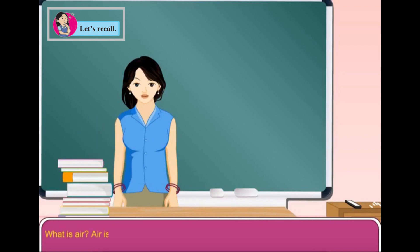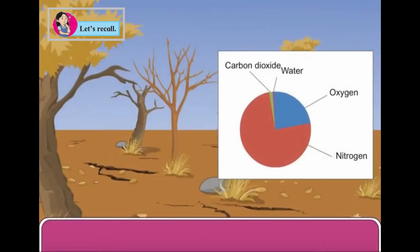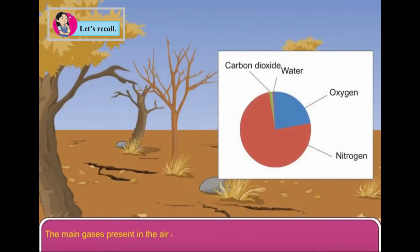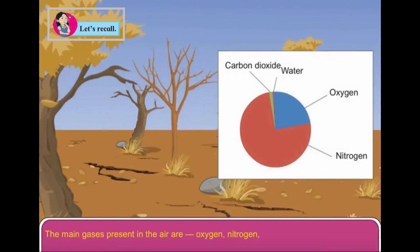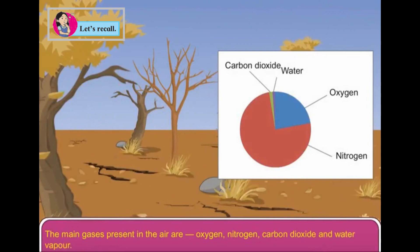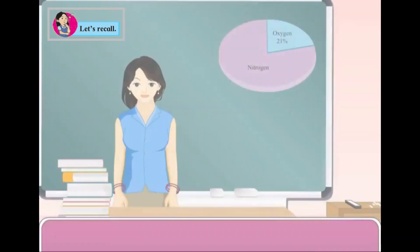Air is a mixture of various gases. The main gases present in the air are oxygen, nitrogen, carbon dioxide and water vapour.